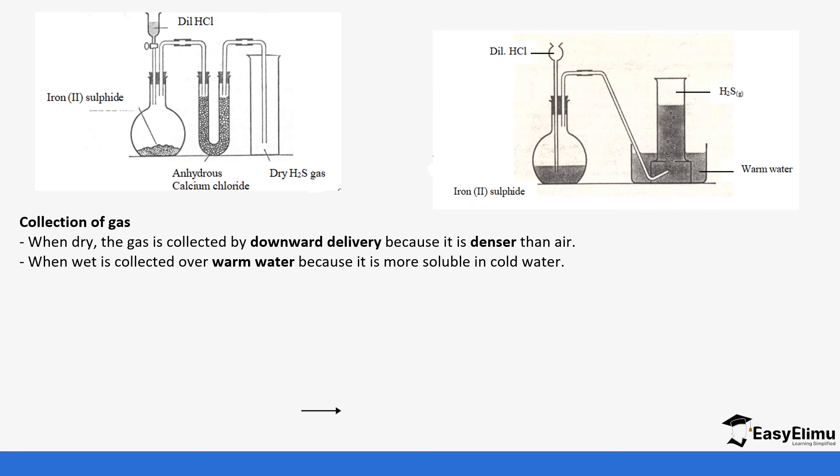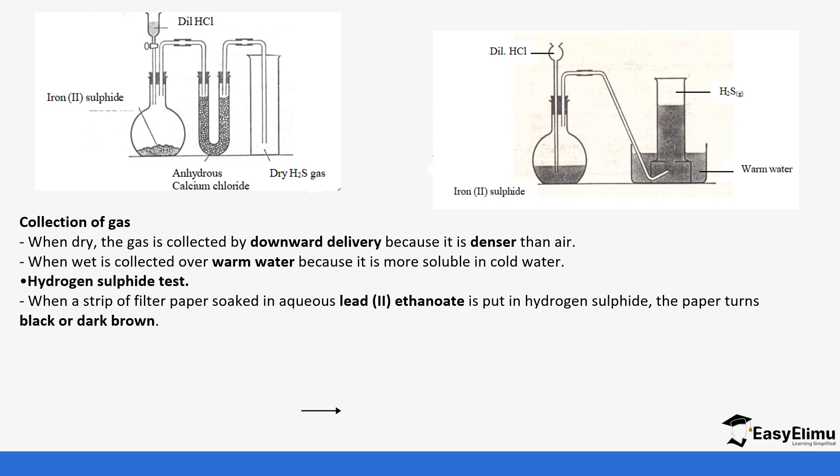To test for hydrogen sulfide, we use a strip of filter paper soaked in lead(II) ethanoate and put it in the gas you are suspecting to be hydrogen sulfide. What happens is that the paper is going to turn black or dark brown.